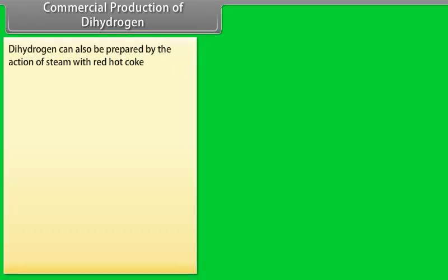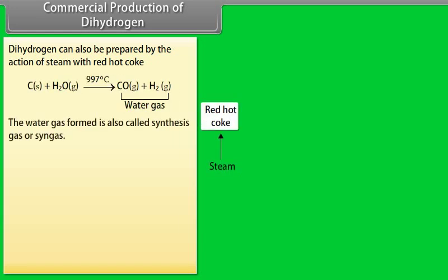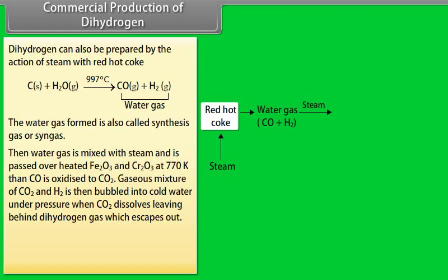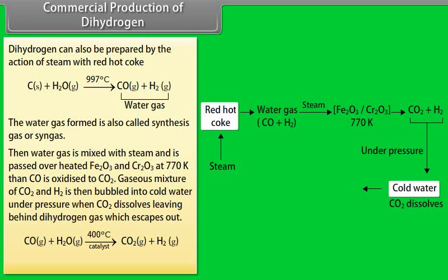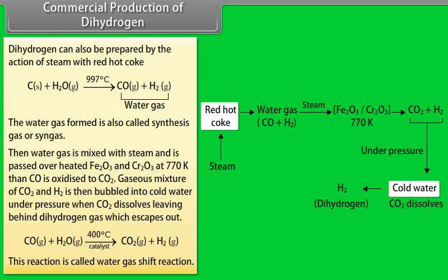Commercial production of dihydrogen. Dihydrogen can be prepared by the action of steam with red hot coke. The water gas formed is also called synthesis gas or syngas. Then water gas is mixed with steam and is passed over heated Fe2O3 and Cr2O3 at 770 Kelvin, then CO is oxidized to CO2. Gaseous mixture of CO2 and H2 is then bubbled into cold water under pressure when CO2 dissolves leaving behind dihydrogen gas which escapes out. This reaction is called water gas shift reaction.